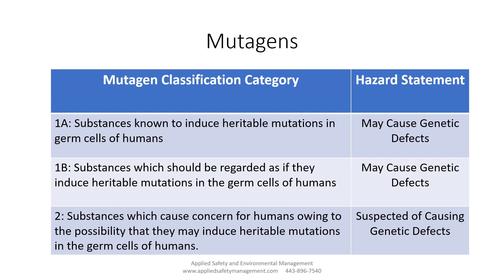The classification system is very close to what we found for carcinogens, but not quite the same. We have class 1A, 1B, and 2, each with a category and hazard statement. Class 1A covers substances known to induce heritable mutations in germ cells of humans; the hazard statement is 'may cause genetic defects.' Class 1B covers substances which should be regarded as if they can induce heritable mutations; the hazard statement is also 'may cause genetic defects.' Category 2 covers substances which may cause concern owing to the possibility they may induce heritable mutations; the hazard statement is 'suspected of causing genetic defects.'